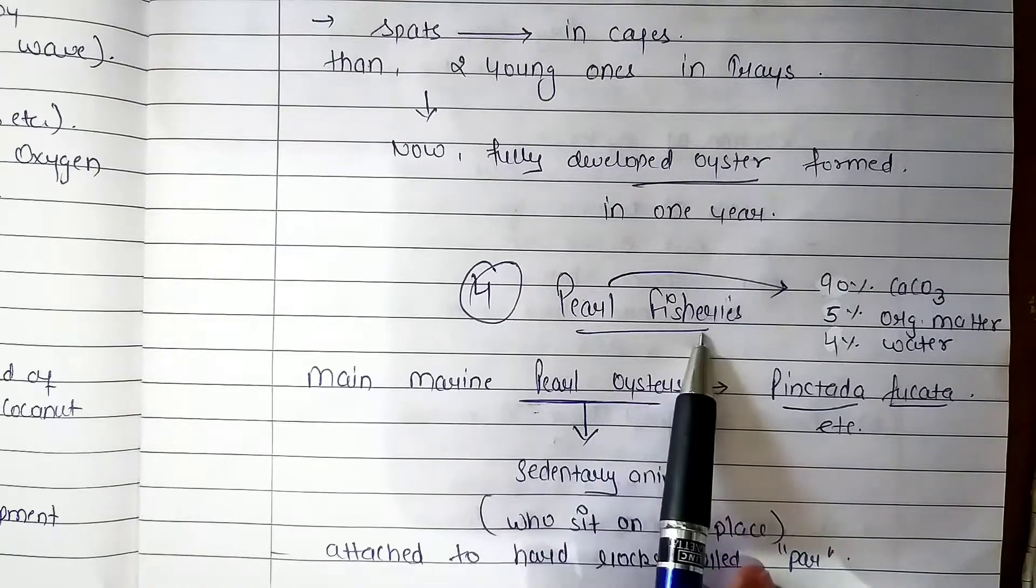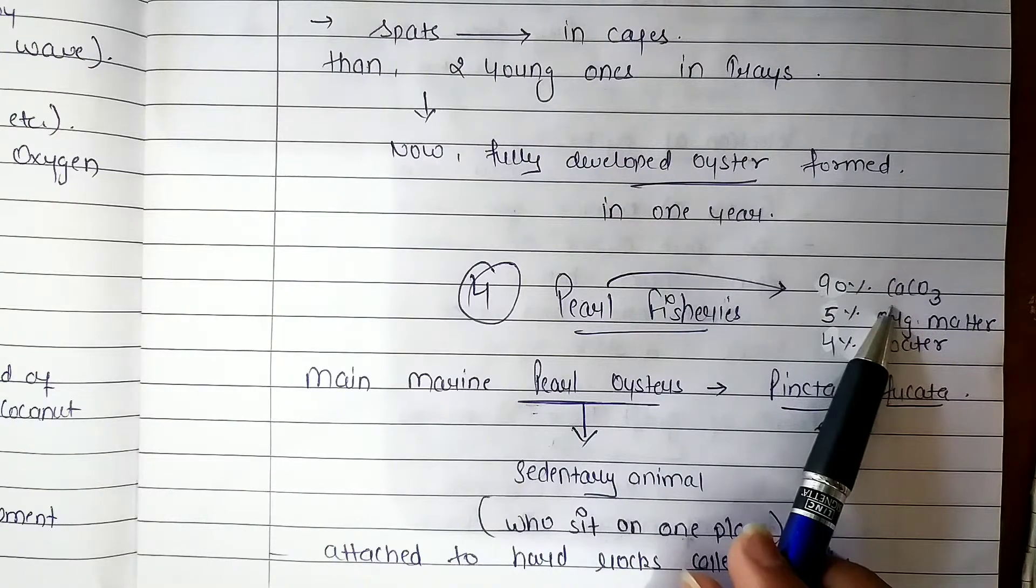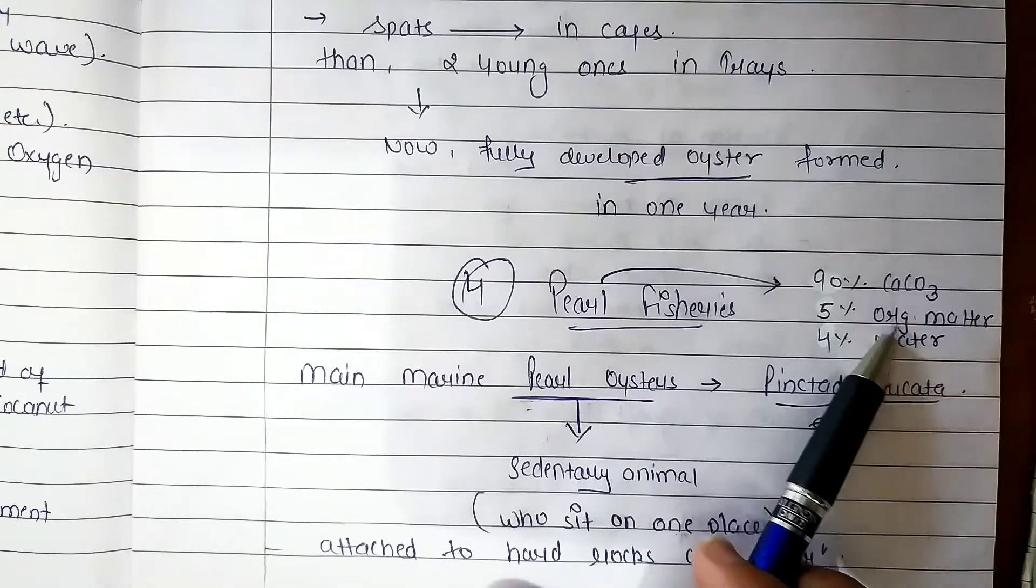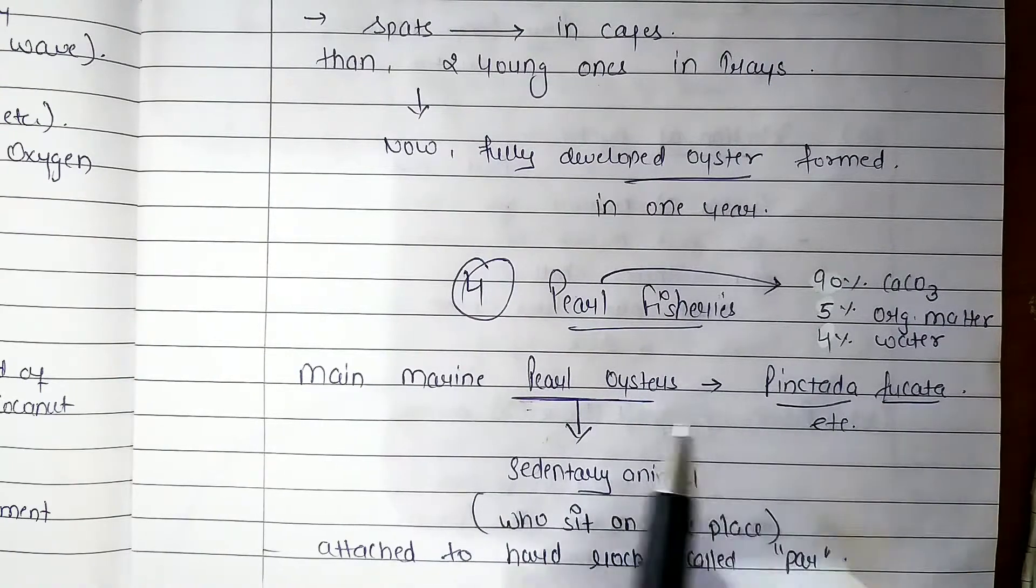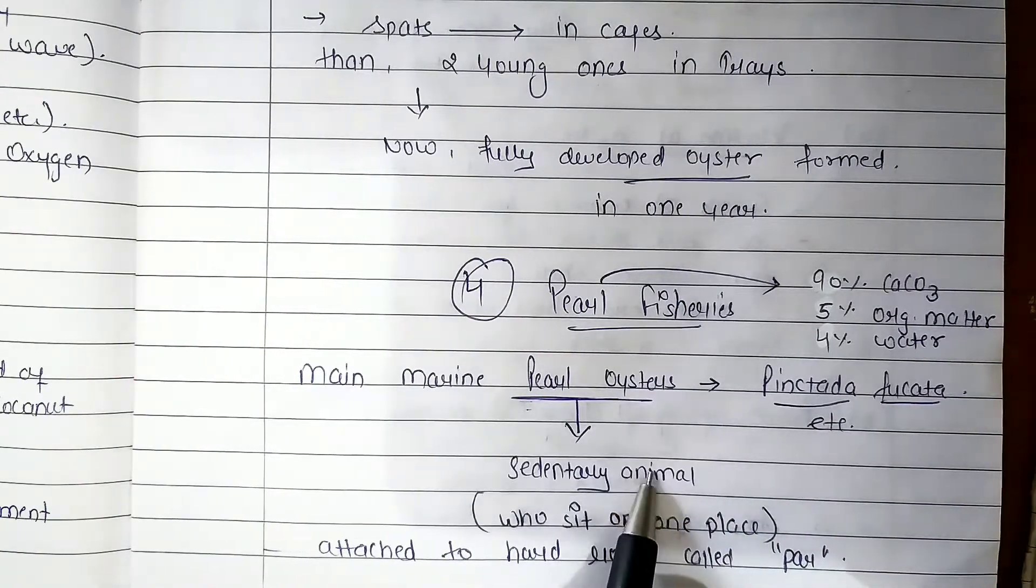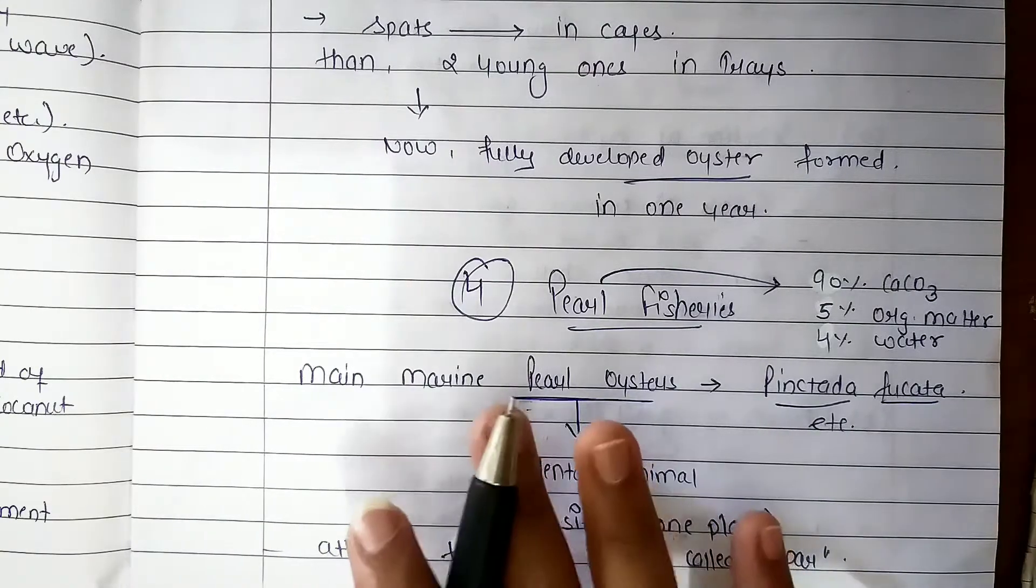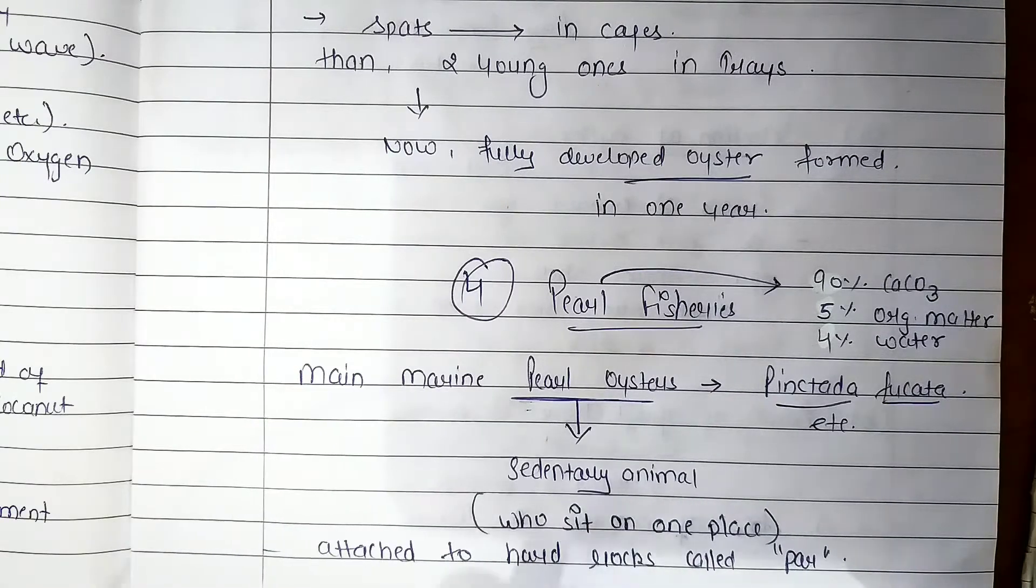That is the pearl culture. Pearls we have all seen. The main part is calcium carbonate, then organic matter and some water. The main pearl oyster is Pinctada fucata. Pearl oysters are sedentary animals, fixed in one place on large stone rocks.